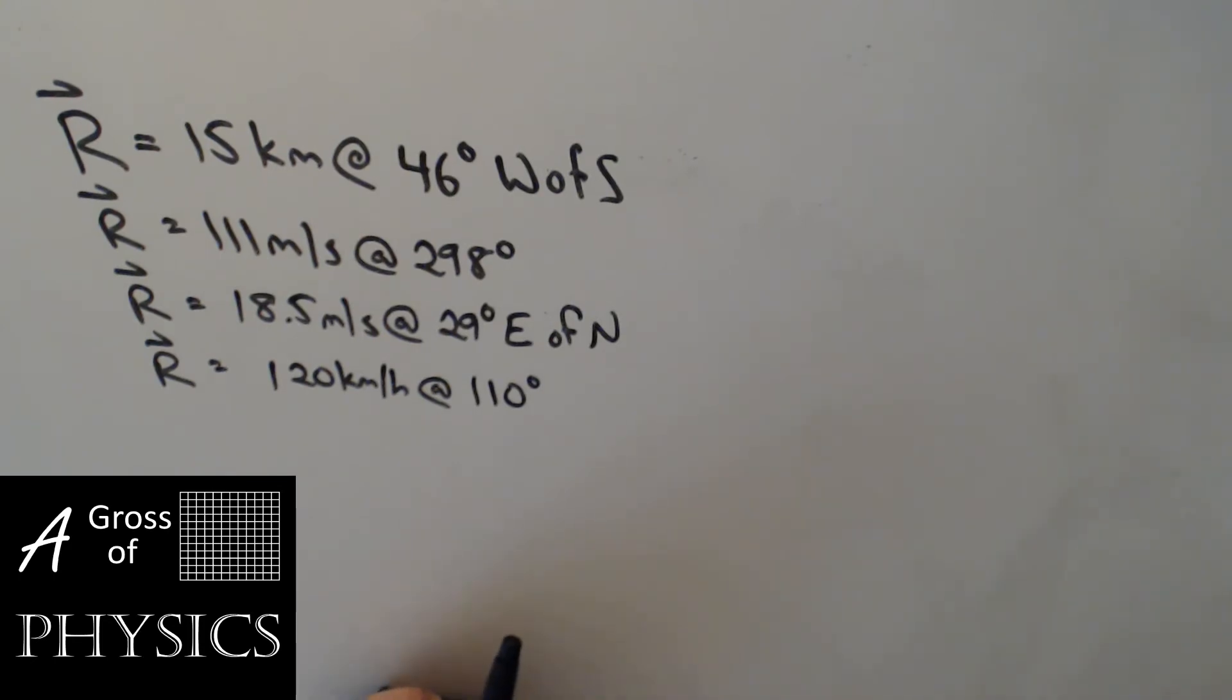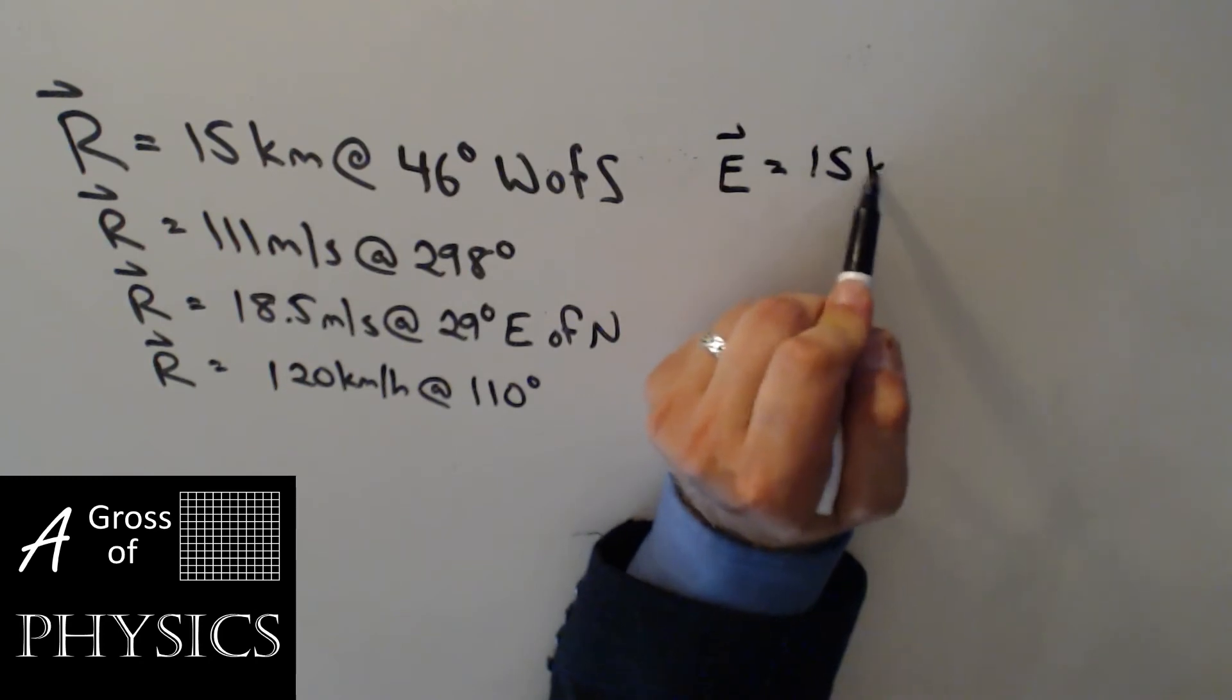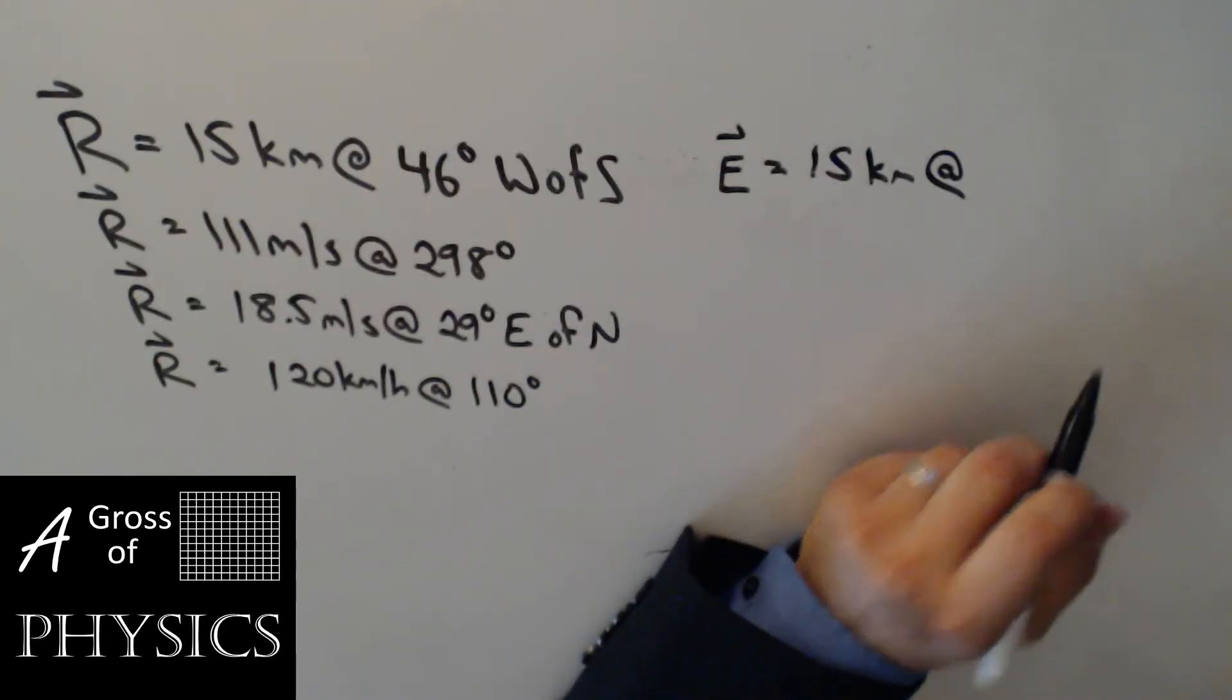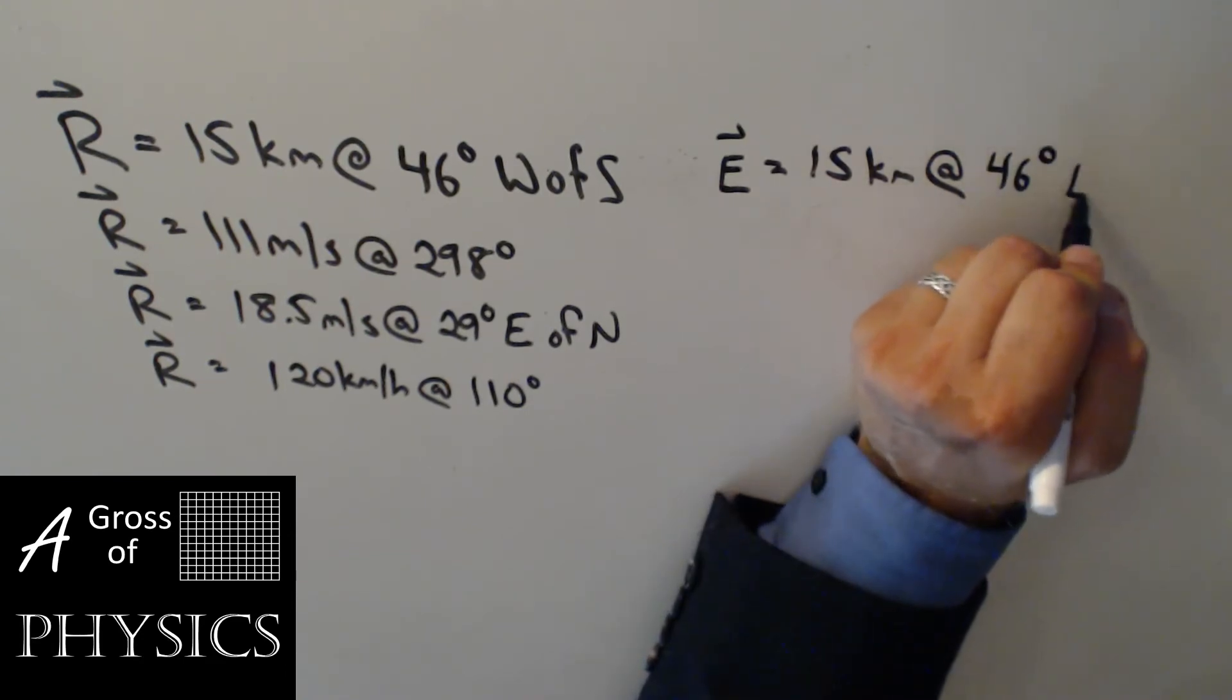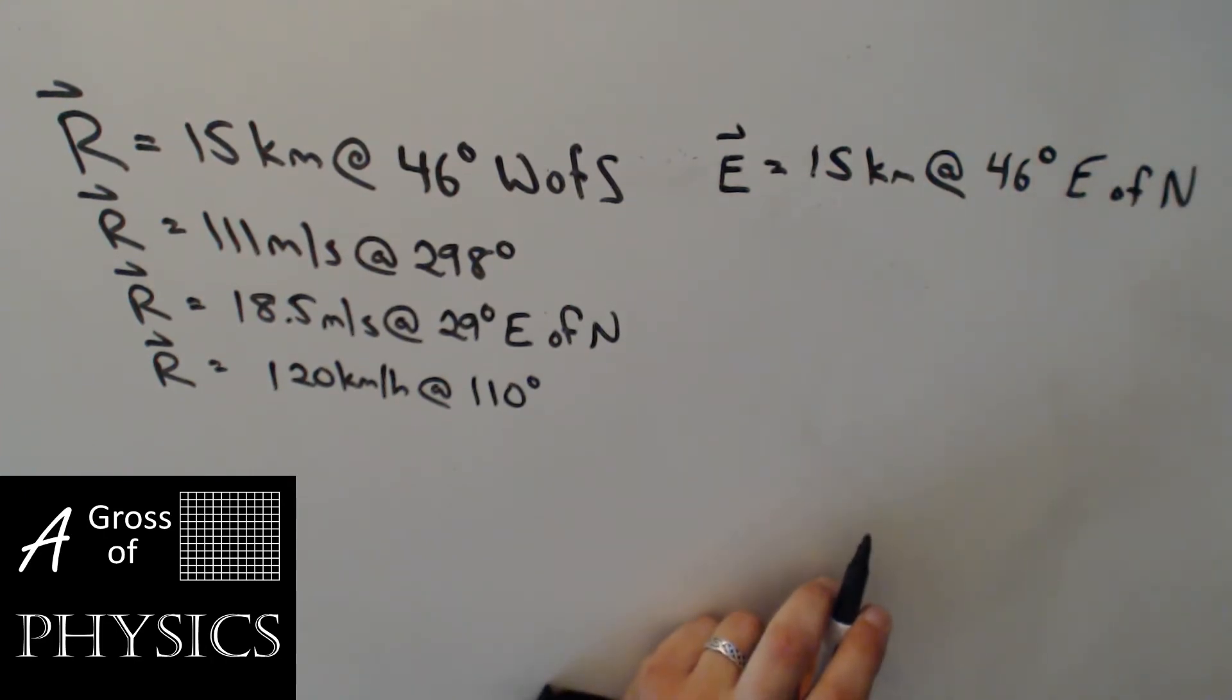Now the equilibrant is whatever will cancel out the resultant. So what we want the equilibrant to do is point in the opposite direction. So if these are our four resultants, each of the equilibrants will have the same length. So in this case, 15 kilometers. Since we're dealing with north, south, east, and west, the angle is the same. It's 46 degrees. We change the west to an east, and we change the south to a north. So it's 15 kilometers at 46 degrees east of north.